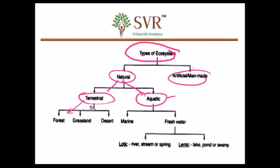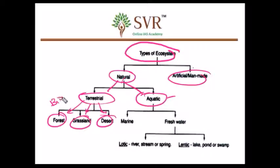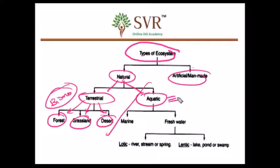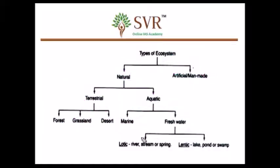Terrestrial ecosystems can be further classified into desert, grassland, and forest — we already discussed about these in detail under the biomes topic. Aquatic ecosystems can be freshwater and marine. So let's discuss about each one by one.